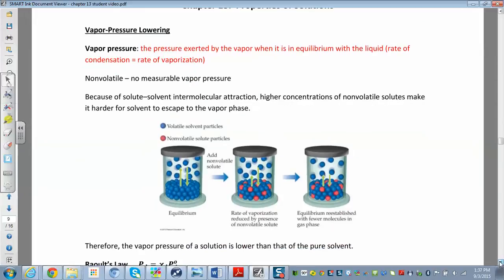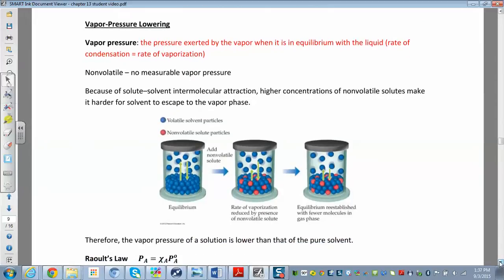So vapor pressure lowering. Why does the vapor pressure always go down? If you think back to chapter 11, when we talked about vapor pressure, we had a liquid and some of the liquid was evaporating. So you have a liquid and a gas and they're in dynamic equilibrium, which means that the liquid turning into gas equals the rate at which the gas is turning back into liquid. The rate of condensation equals the rate of vaporization. And at that point, you're in dynamic equilibrium and you can measure the vapor pressure.